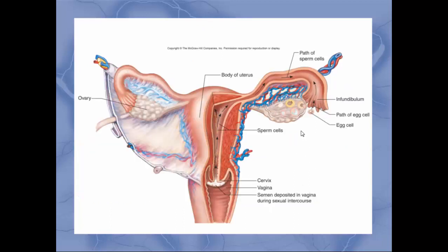This image we used before in a previous lecture. The follicle here is ovulating the secondary oocyte, and then the egg will move down this way. The sperm cell will enter through here, and the two will meet usually right about here for fertilization — in the ampulla of the fallopian tube.